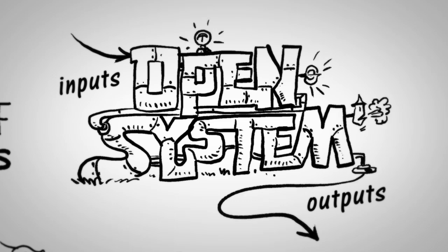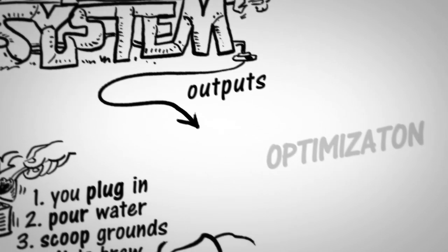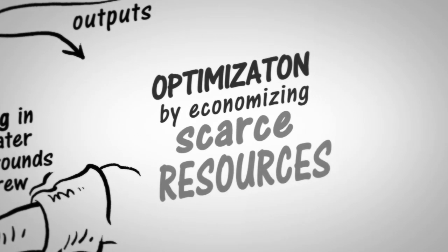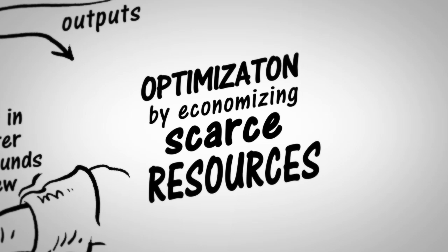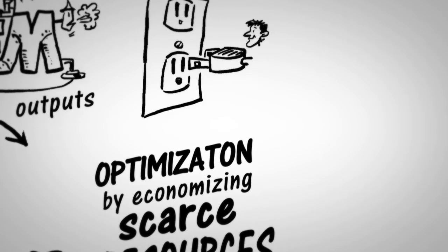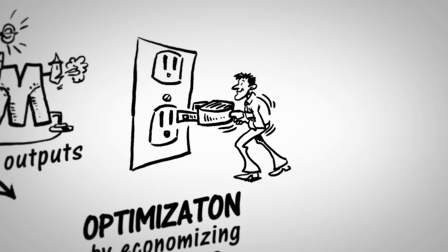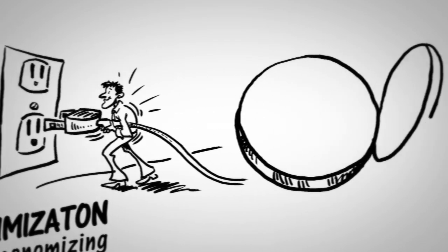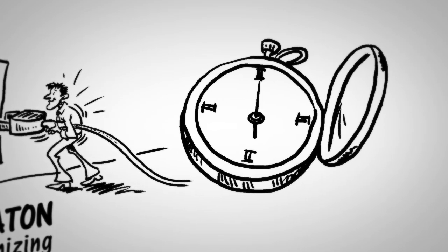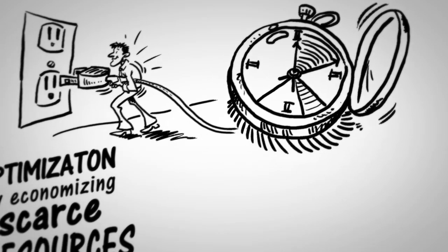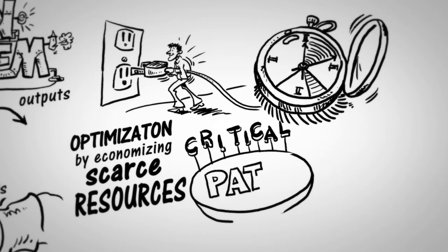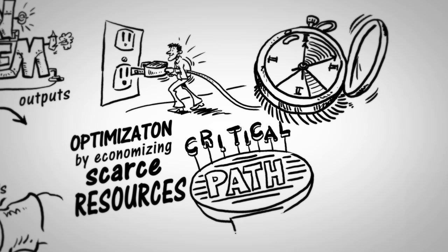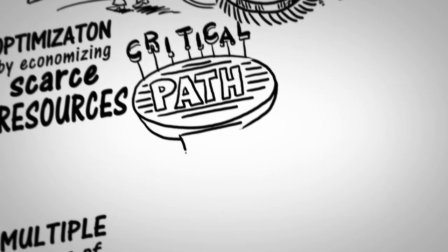The input is converted to the output through a process. We can optimize the system by economizing resources that are scarce. If time is the scarce resource, your first action might be to plug in the coffee maker because you notice that warming up the coffee maker takes longer than the other tasks. Project managers call these tasks critical path tasks. When economizing on time, these tasks are completed first. As the manager of the system, you optimize the process through experiment and experience.